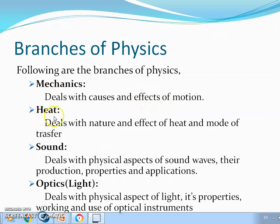The second branch is heat. It deals with nature and effect of heat and mode of transfer. Nature of heat - basically there are many types of heat. Heat which is generated by oven is of other nature, heat generated by burning fuel is of other nature, heat created by burning coal is of other nature.